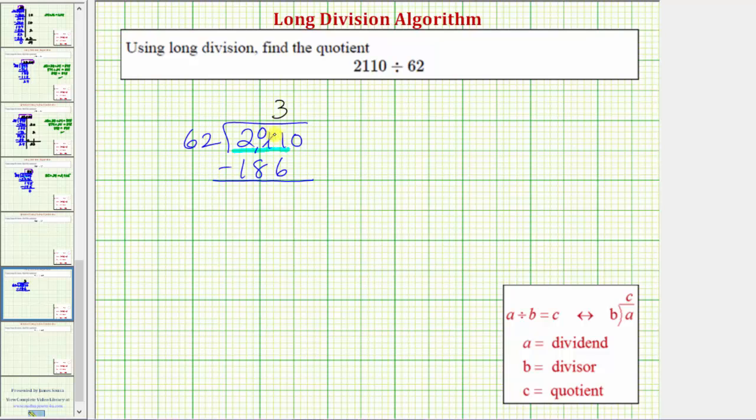We need to perform an exchange here. 11 minus 6 is 5. 20 minus 18 is 2. So because the difference is 25, which is less than 62, the 3 is correct. Now we bring the next digit down.